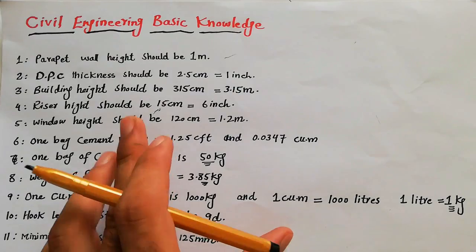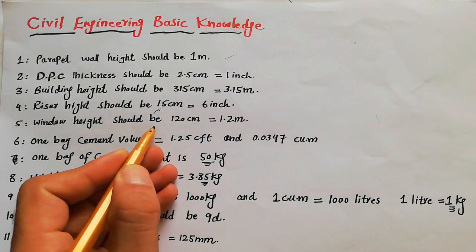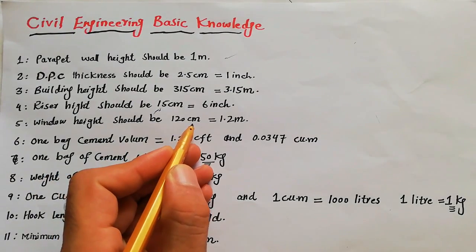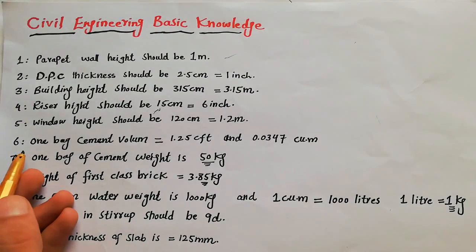Fifth: window height should be 120 centimeters, which is 1.2 meters.